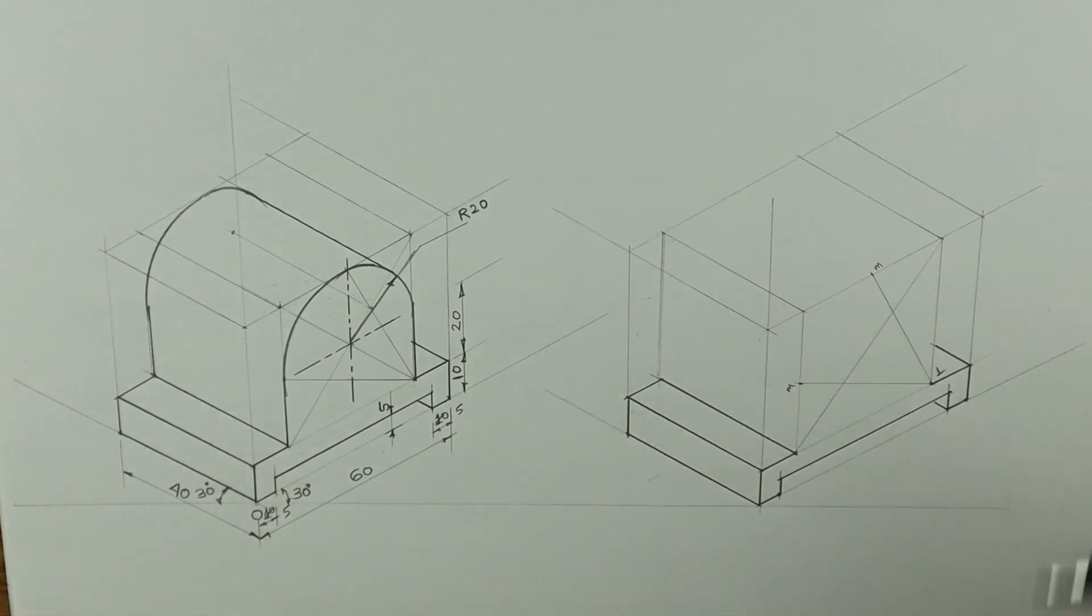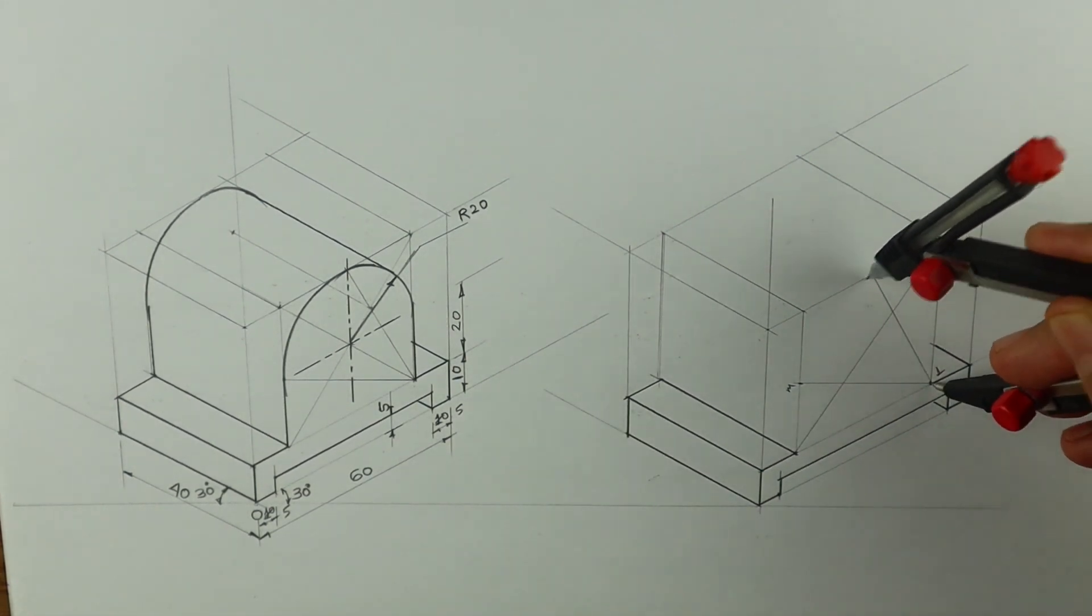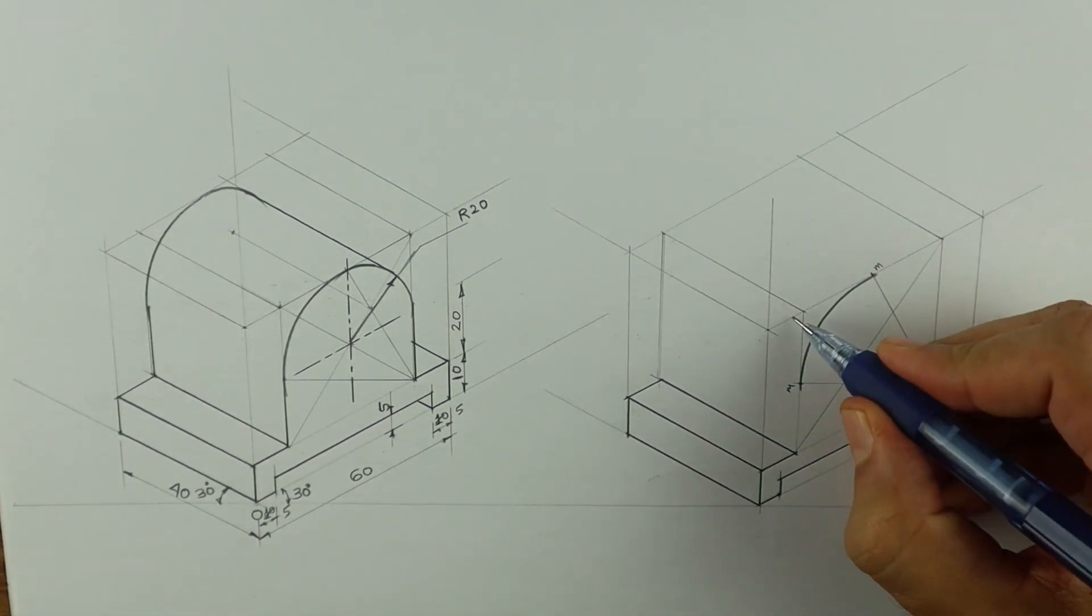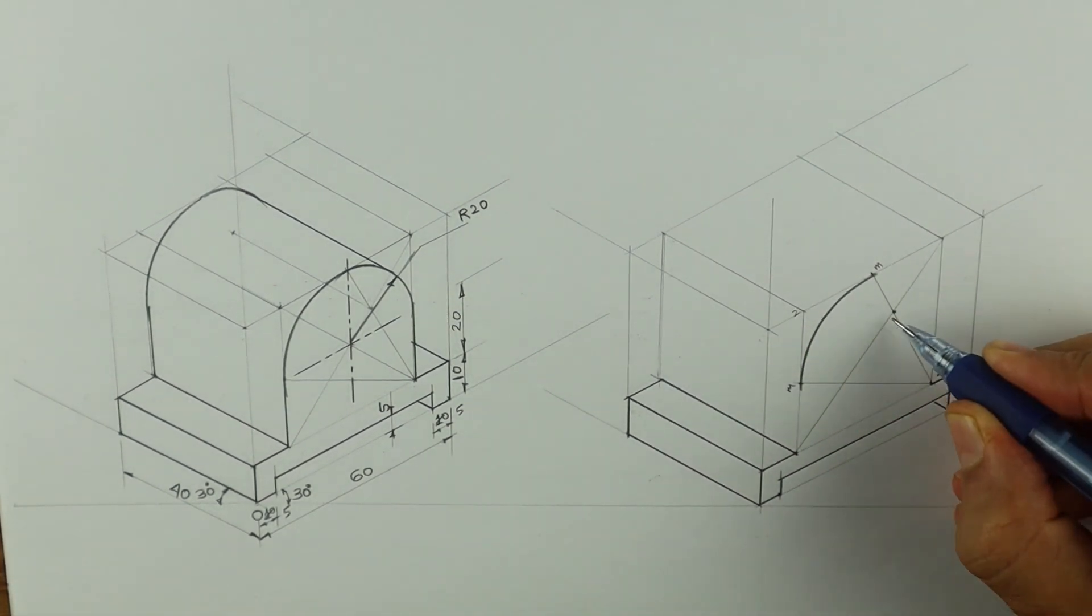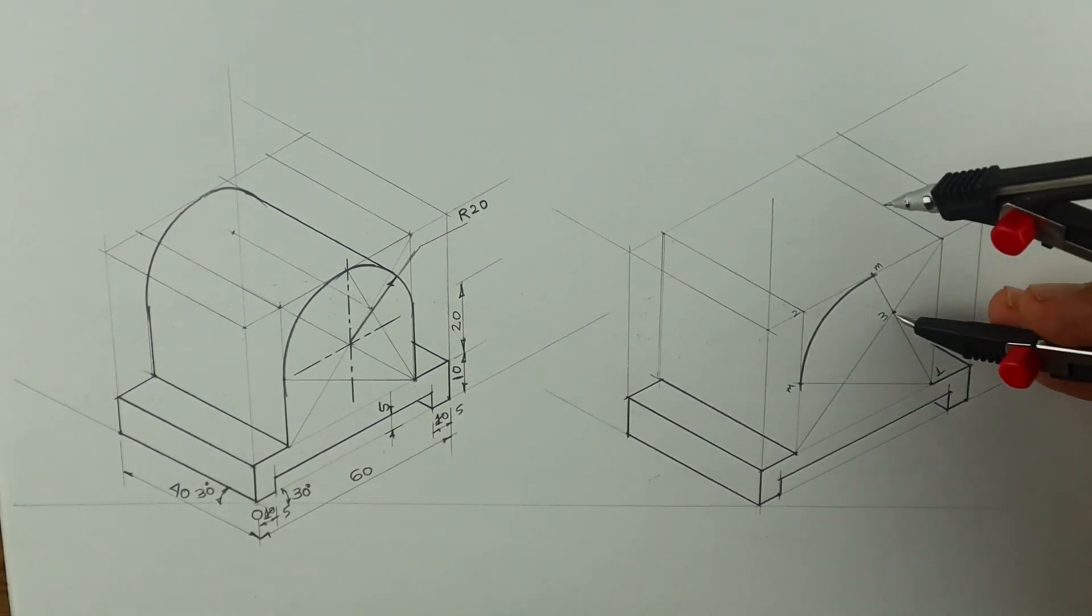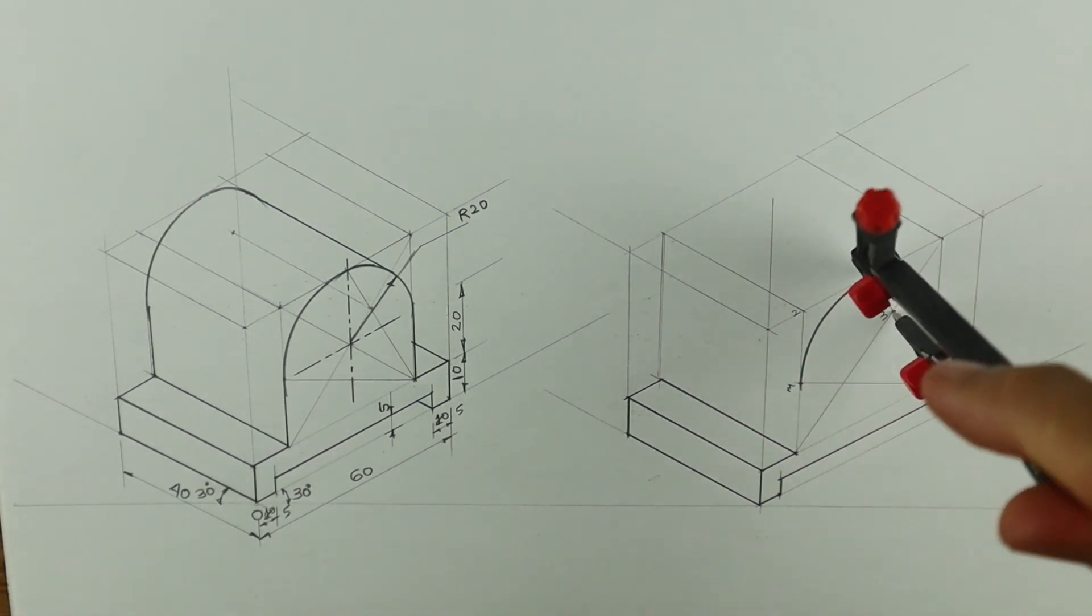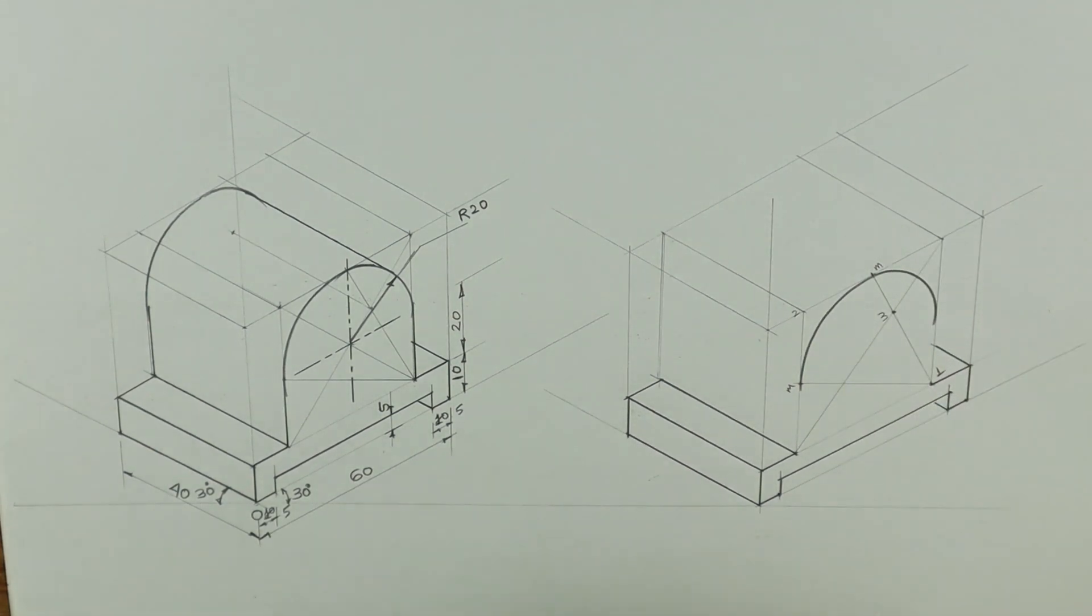Now we'll join 1 to M. Take 1 to M in your compass and draw an arc. Now the same thing, we don't need to do it from point 2 because we are going semi-circular. Now we use point 3, from 3 to M and draw an arc. So you'll get the required circular shape.